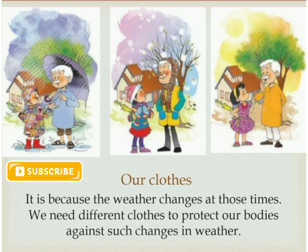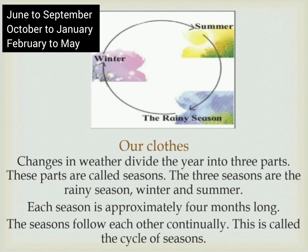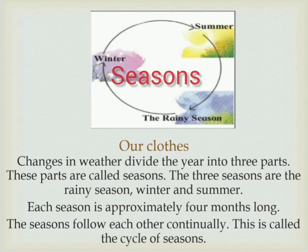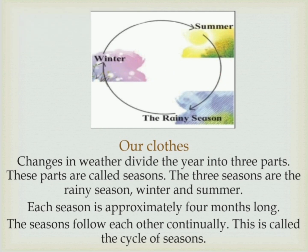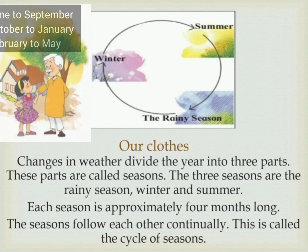Let's understand why we see changes in the clothes people wear during different times of the year. It is because the weather changes at those times. We need different clothes to protect our bodies against such changes in weather. Changes in weather divide the year into three parts called seasons. The three seasons are the rainy season, winter and summer.